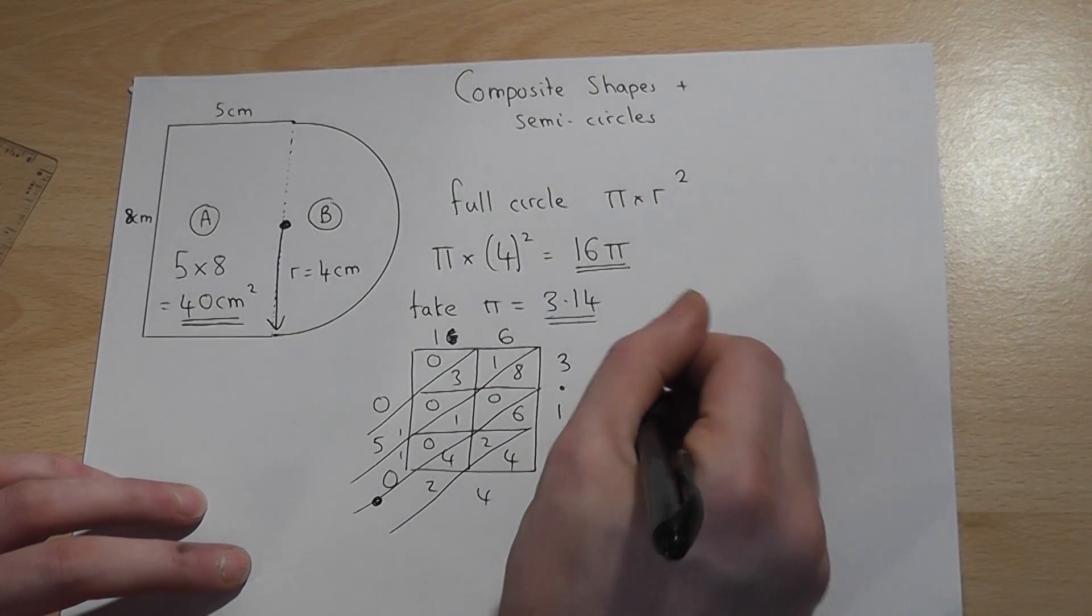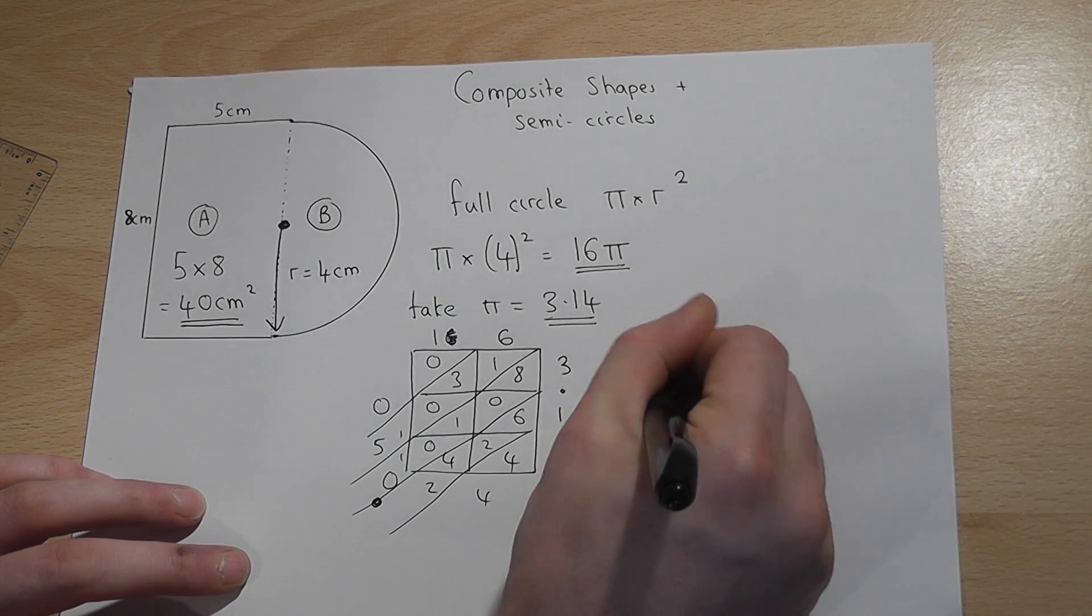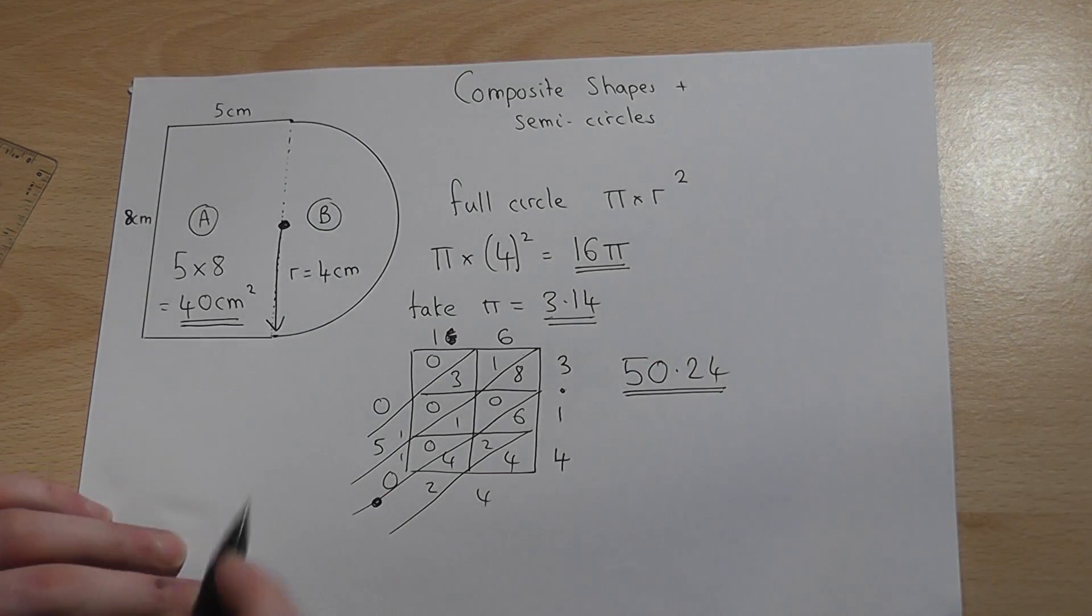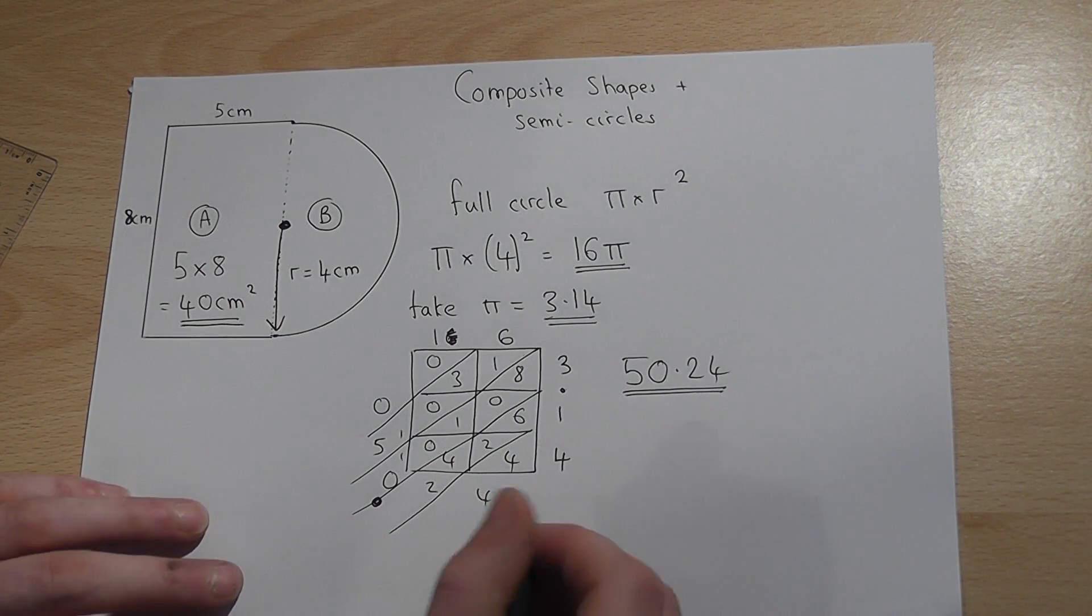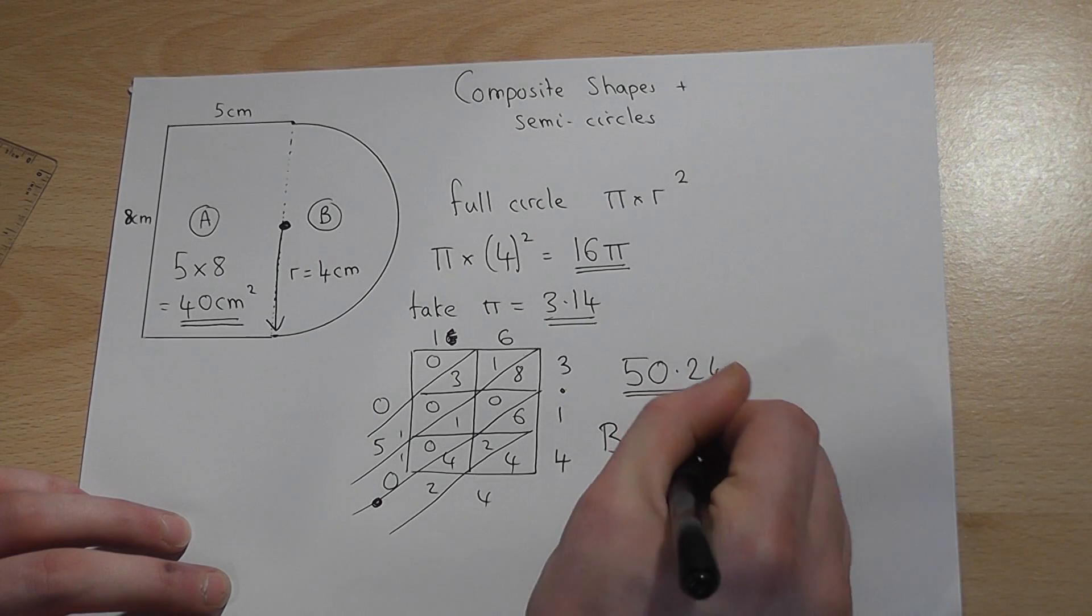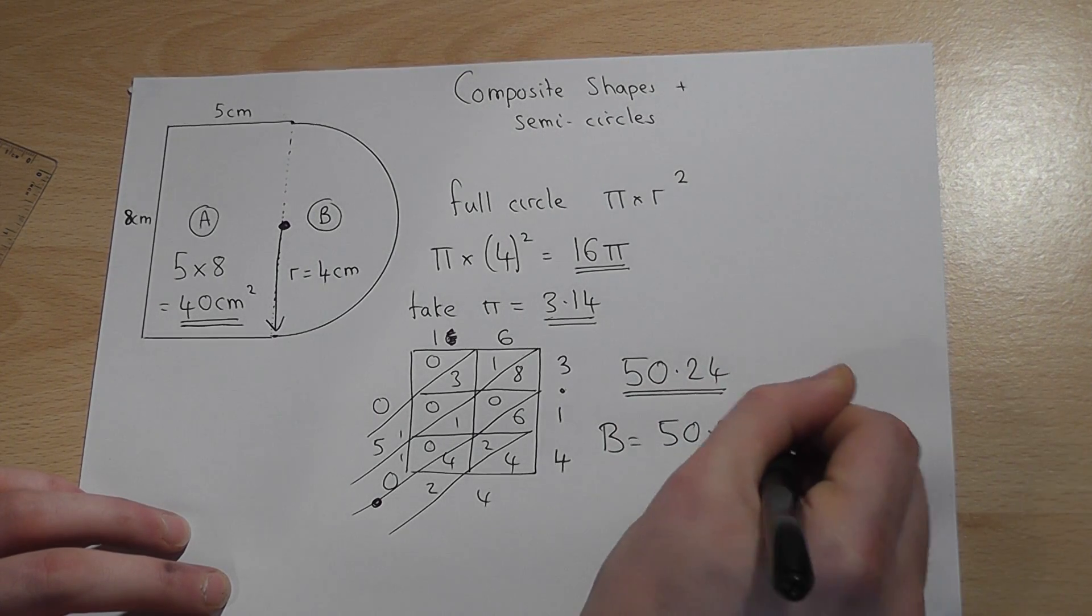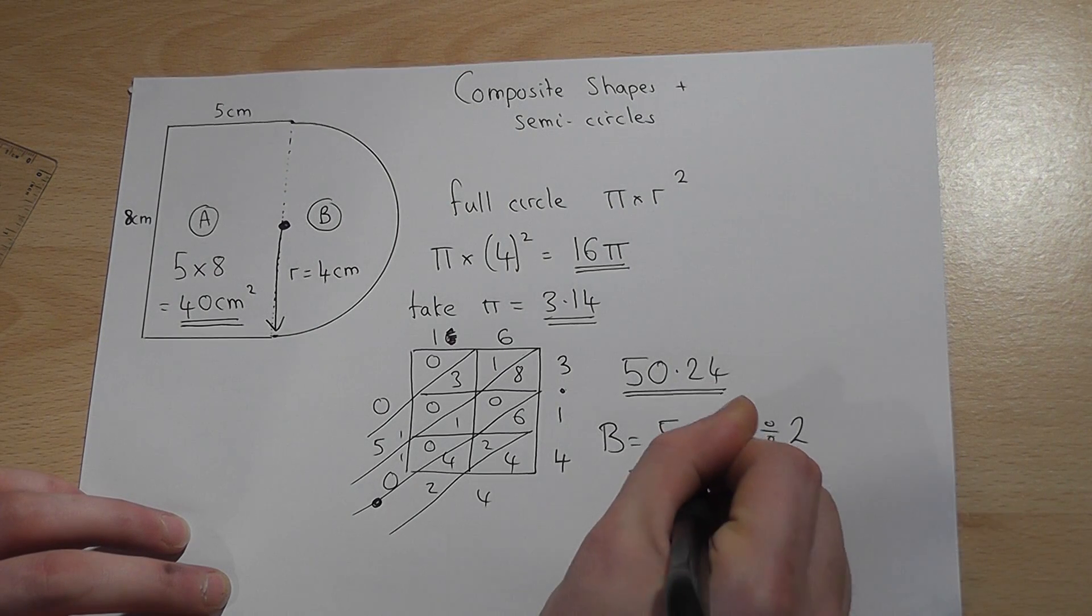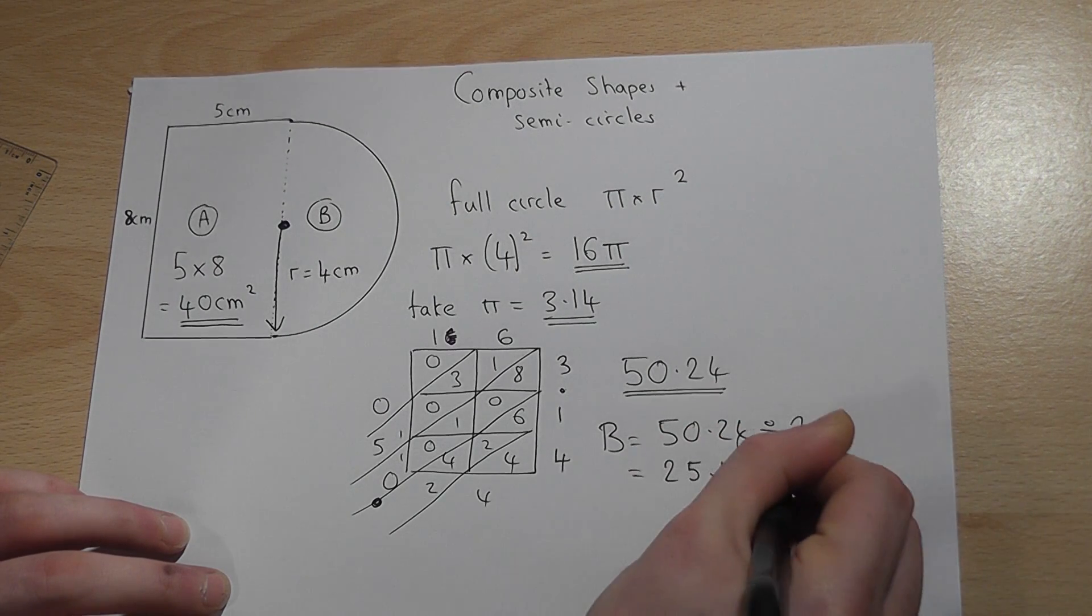So we have the full circle's area would have been 50.24. This is a semi-circle so we have to halve it. So shape B has an area of 50.24 halved which equals 25.12 centimeters squared.